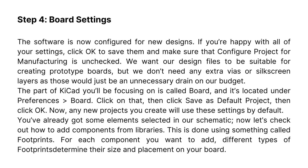Step 4: Board Settings. The software is now configured for new designs. Click OK to save your settings and make sure that Configure Project for Manufacturing is unchecked. We want our design files to be suitable for creating prototype boards, but we don't need extra vias or silkscreen layers as those would be an unnecessary drain on our budget. The board settings are located under Preferences > Board. Click on that, then click Save as Default Project, then click OK. Any new projects you create will use these settings by default.